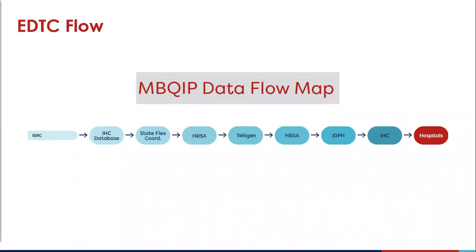This is a snippet to show you how the visual of the EDTC data flow works. The data represents the multitude of partners involved in data flow. Once you enter your data, you have two options for viewing: the first is the run chart we looked at on the prior slide, and the other is that IHC will be sending out reports to you. We've developed some new reports for all of the MB-CLIP measures, which will be user-friendly.